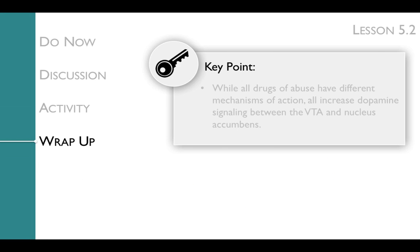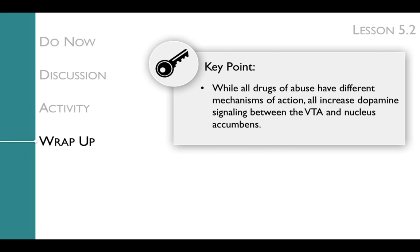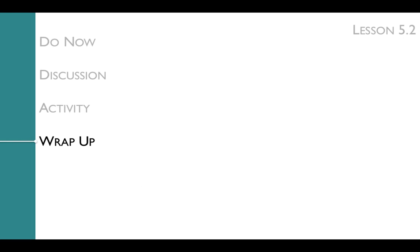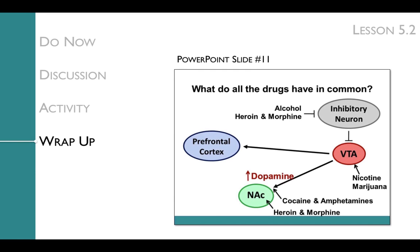The key point of the wrap-up is that while all drugs of abuse have different mechanisms of action, all increase dopamine signaling between the VTA and nucleus accumbens. We'll get to this key point with a reflection and discussion. During the wrap-up, you'll ask students what do all the drugs have in common. The picture on slide 11 illustrates where all the drugs act within the reward pathway, and by stepping through the action of the circuit, students should see that all drugs of abuse increase dopamine signaling at the nucleus accumbens, and they're all addictive.